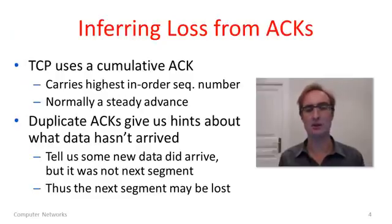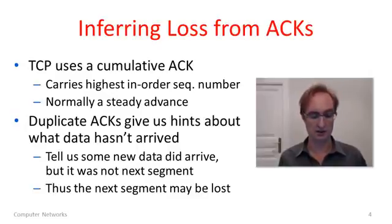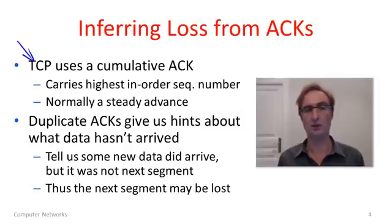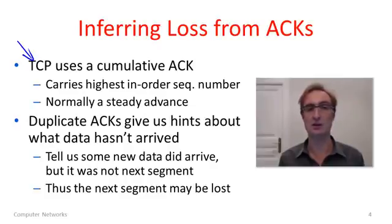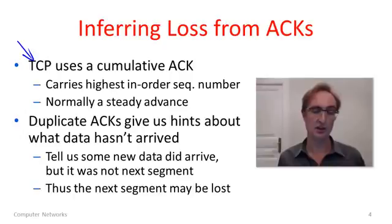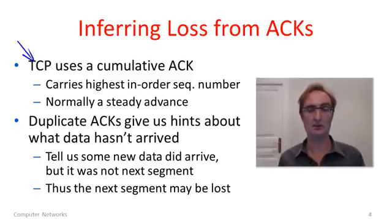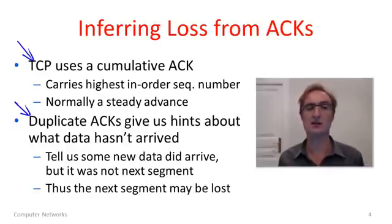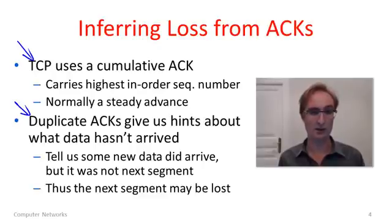The way we're going to do better is by using more information in the ACK stream. By looking at the ACK stream you can usually infer something about loss. TCP uses a cumulative ACK, which gives the highest in-order sequence number that's been received. When there's no loss it will just steadily advance. When there's loss there will be a hole in the sequence numbers at the receiver side and the cumulative ACK will get stuck, repeating the highest in-order sequence number. These are called duplicate ACKs.